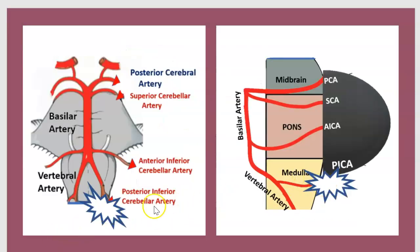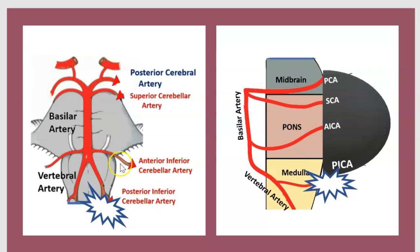Here are the areas of ischemia in sagittal view and in posterior view. Here is the posterior inferior cerebellar artery and here is the medulla. The area of ischemia involves PICA and the vertebral artery. In the posterior view it is the same — the ischemia is in the posterior inferior cerebellar artery territory.